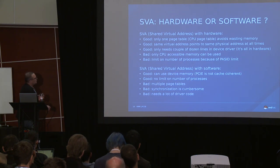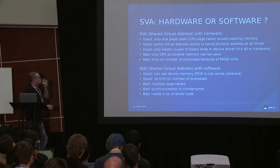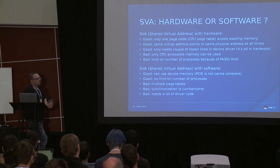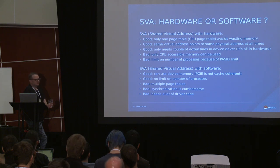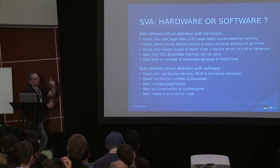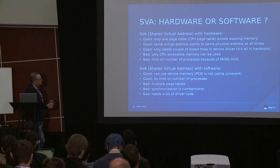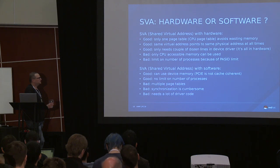There are still a couple of issues with the hardware solution. You can only access memory that is accessible by the CPU. Also on some platforms there is a limit on the number of active PASIDs — it used to be 8, then 16, and most platforms are now at 256 process IDs. Often you recycle PASIDs by swapping out inactive processes and associating them with a new PASID. But it can still become a limit when you have many processes running simultaneously.